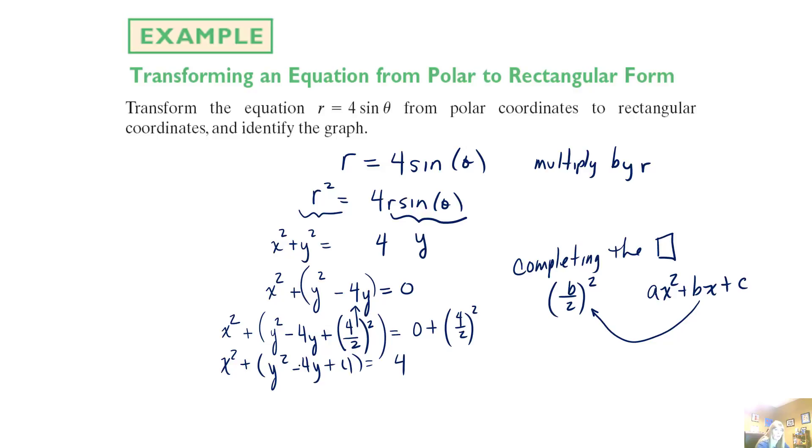And then, of course, this gives me x squared. The whole reason that you complete the square is so you can turn this into a perfect square. So y minus 2 squared equals 4. Well, if you remember, a circle is x squared plus y squared. So what this equation is, because it says identify the graph, would be a circle with center 0, 2.